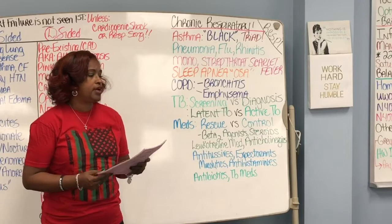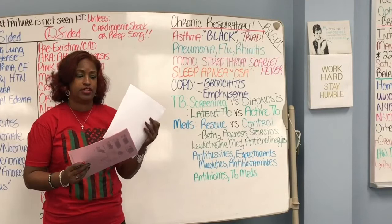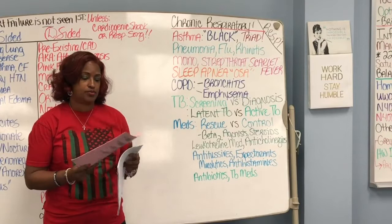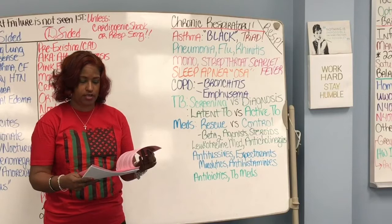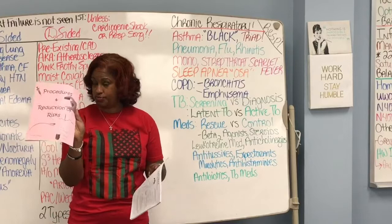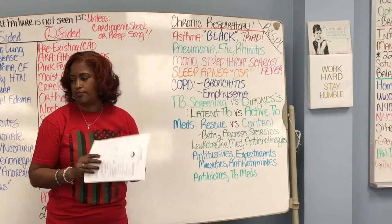For this lecture on chronic respiratory, you're going to need the packet that says asthma. A lot of what I'm talking about will also be in your procedures packet. The page you want to turn to in your procedures packet is page six, because respiratory conditions and procedures will be on pages six and seven.